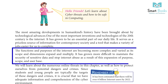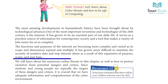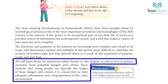The functions and purposes of the internet are becoming more complex and varied as its scope and dimensions expand and multiply. It has grown more difficult to maintain the security of sensitive data and stop internet abuse as a result of this expansion of purpose, scope, and user base. We will learn about the numerous online threats in this chapter, as well as how to protect ourselves from potential dangers and crimes. Since students and young people are typically the targets of these dangers, it is crucial that they have adequate information and comprehension of the cyber environment.